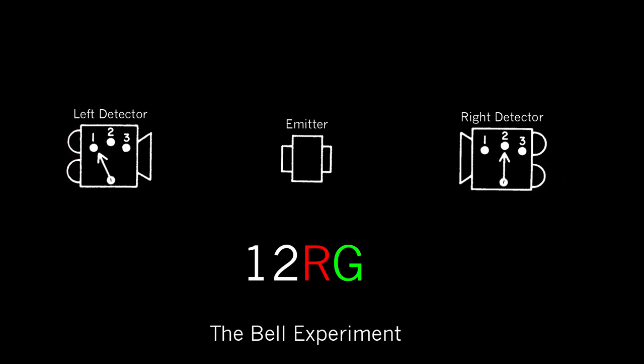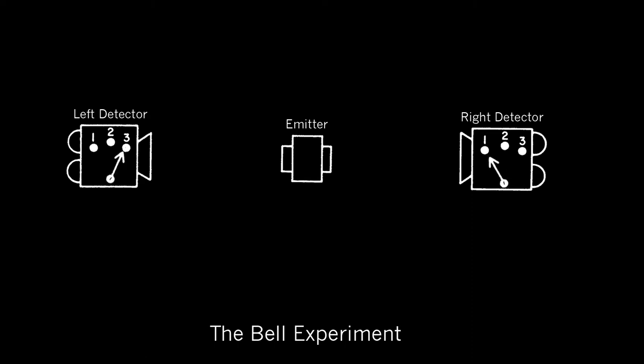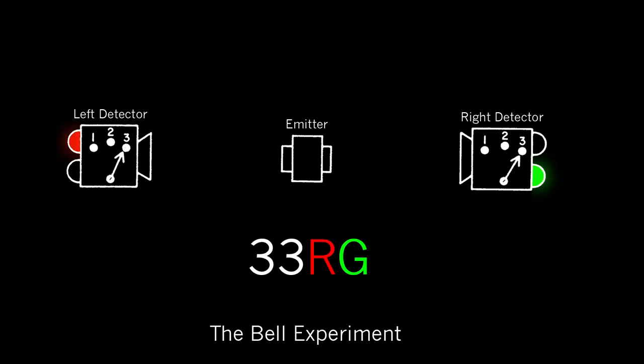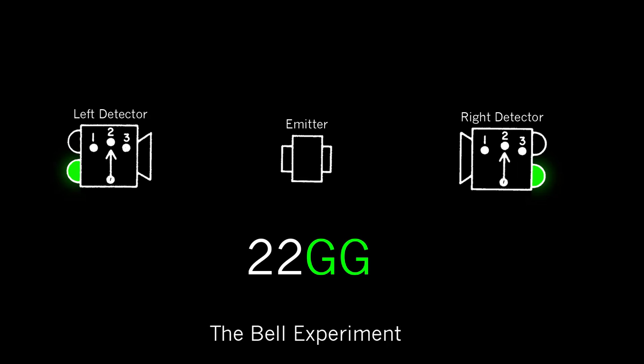That's what we do when we run this experiment over and over again. We could set the detectors to combinations like 1-1, 2-1, 1-3, 2-1, 2-2, 3-3, 1-3, 2-3, or 3-3, and we just press the button and see what we get, then write down the result — for example, 1-1 red-red, or 2-2 green-green — corresponding to each run of the experiment.